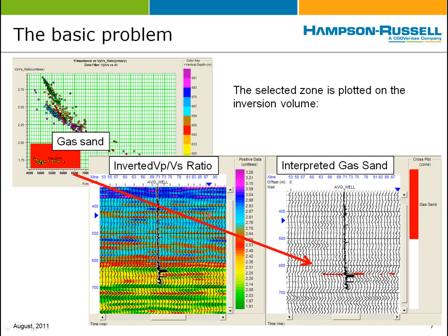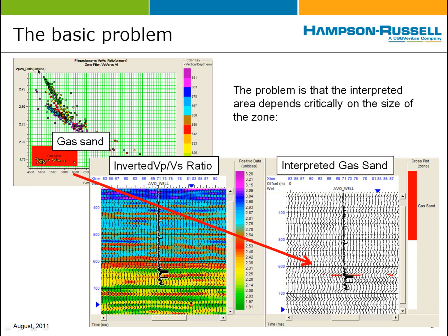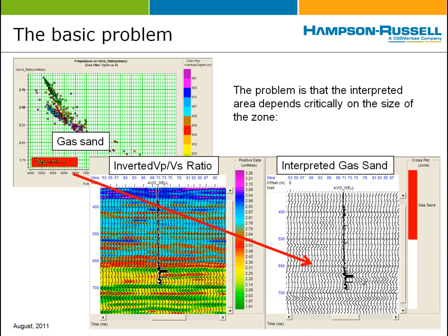That highlighted and selected zone could be plotted on the inversion volume. This is a highly satisfying and elegant way to proceed, but the problem is that there's a certain arbitrariness associated with that zone that I've isolated. For example, if I happen to make the zone a little smaller, then the corresponding region on the inversion result gets smaller as well, so that the interpreted area depends critically on the size of the zone. In fact, if I make the zone small enough, the interpreted area could go away completely. This is not a satisfactory state of affairs.